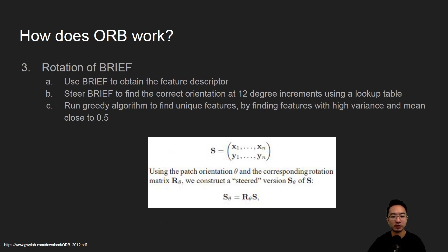Okay, so rotation of BRIEF. The idea is you use BRIEF to obtain the feature descriptor. And what you want to do is steer BRIEF to the correct orientation at 12 degree increments using a lookup table.